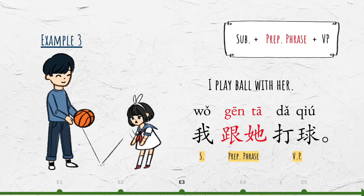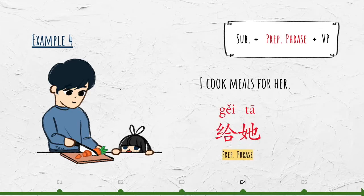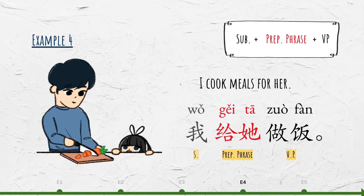Another example. I cook meals for her. For her? 给她. Cook meals? 做饭。I cook meals for her. 我给她做饭.